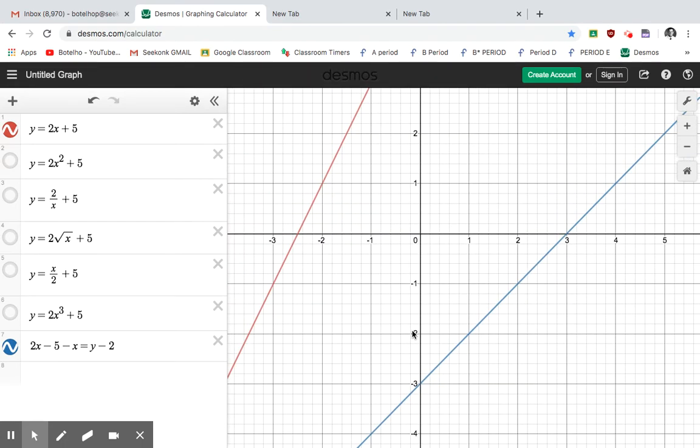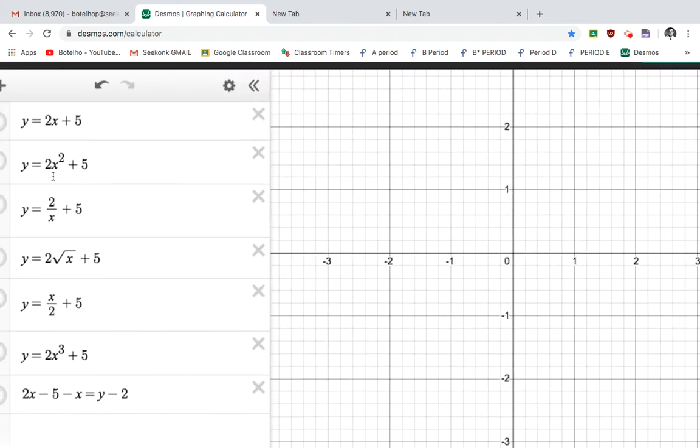So now let's see what happens when I start graphing things that do not have a degree of 1. So first thing, let's do an exponent with the power of 2. So when I do a power of 2 and I graph it here, you can see that, hold on I gotta zoom out.